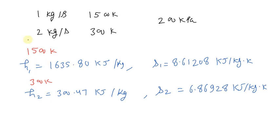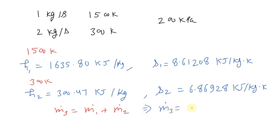Now, let's apply the continuity equation to calculate the total mass flow rate. We can write M3-dot is equals to M1-dot plus M2-dot. Substituting all the values, M3-dot is equals to 1 plus 2, which is equals to 3 kg per second.